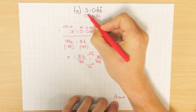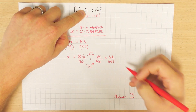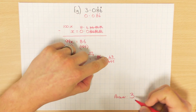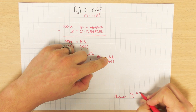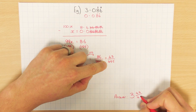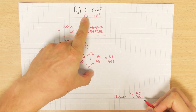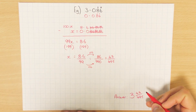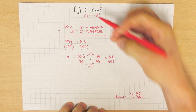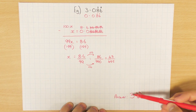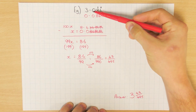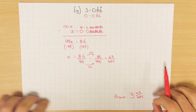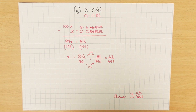That's the fraction for the decimal part. But don't forget you had the whole number three already in your answer, so your final answer would be three and 43 over 495. Just remember to put the whole number and then do the fraction as we've done in all the previous examples. That's everything you need to know about how to turn recurring decimals into fractions — hopefully that helps. Thanks for watching.